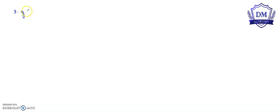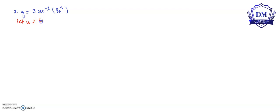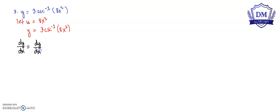Let's have another problem. We have the function y is equal to 3 times the inverse cosecant of 8x squared. We will let u be equal to 8x squared, so our function y is equal to 3 times the inverse cosecant of u. The derivative of y with respect to x equals the derivative of y with respect to u, multiplied by the derivative of u with respect to x.